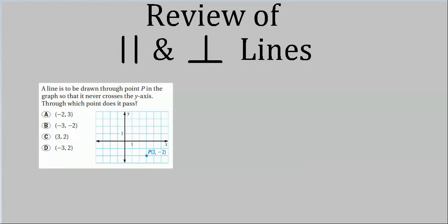Here's a problem you might see on a standardized exam. It says a line never crosses the y-axis. Two lines that never cross each other are either skew or parallel. Since we're drawing on a coordinate plane, the y-axis and our line are in the same plane, so if they don't cross, they're parallel — meaning they have the same slope. What is the slope of the y-axis?